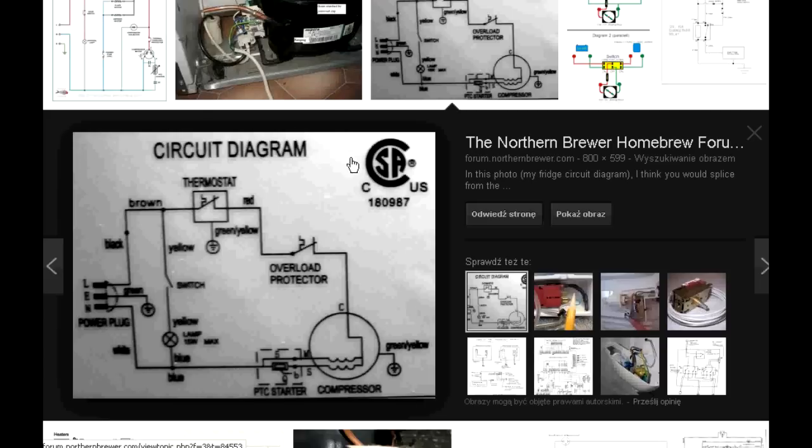Here we have a generic diagram that basically describes almost any fridge. The colors here aren't really important. What is important is that here we have line, here we have neutral, and as we can see our line goes to the thermostat, which is a temperature switch.